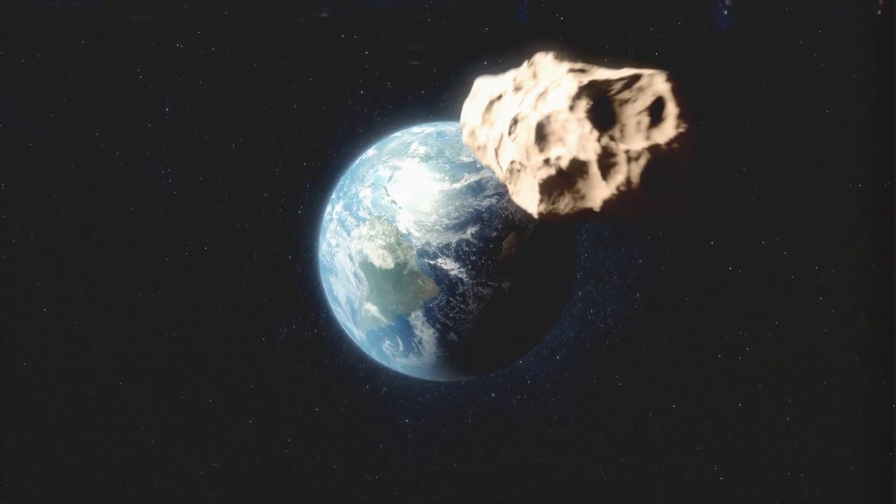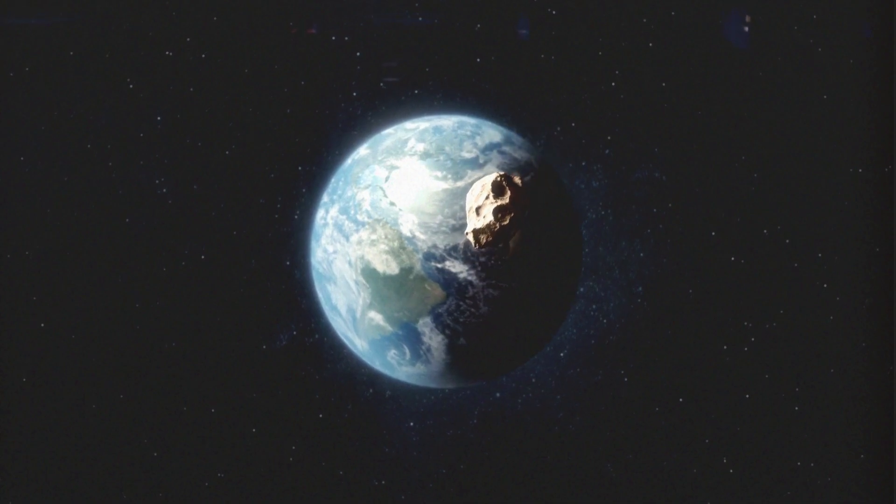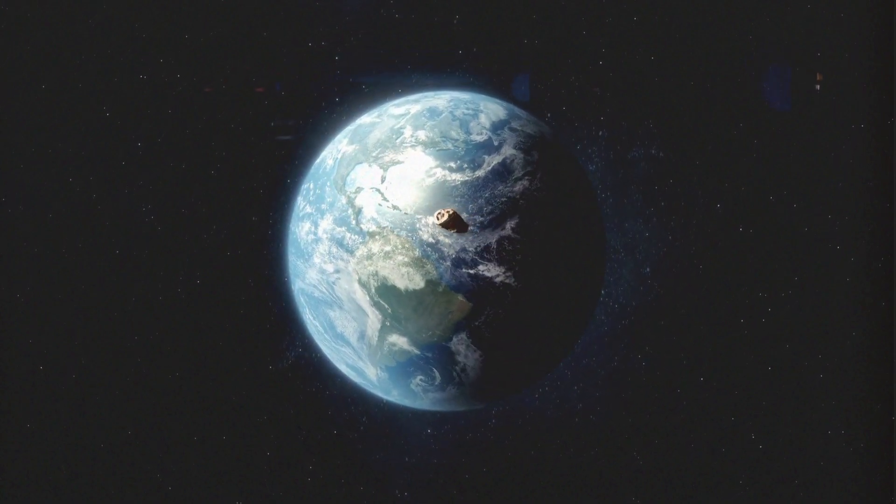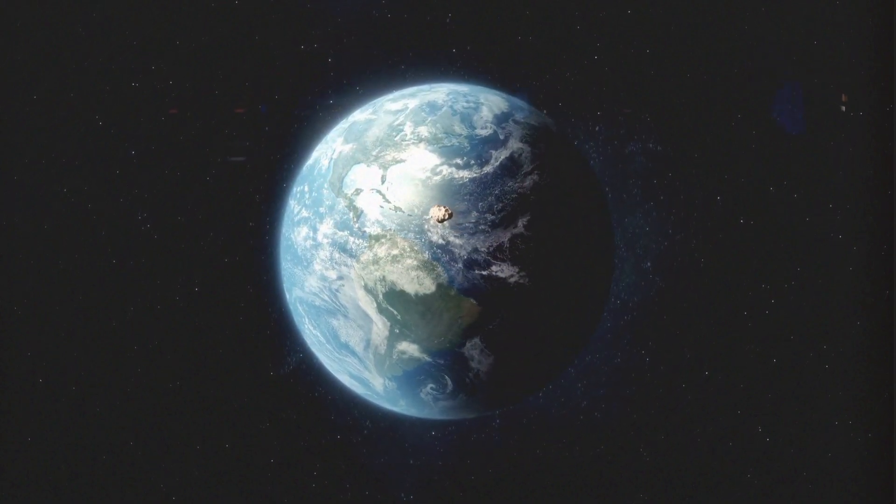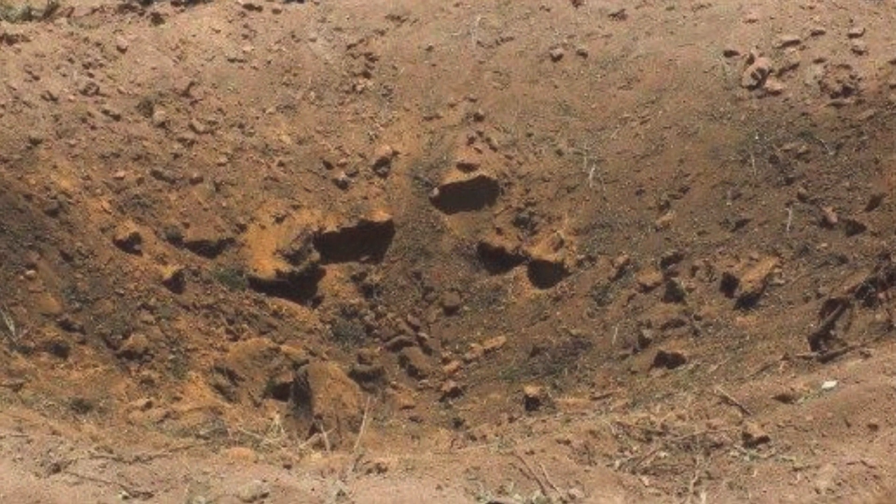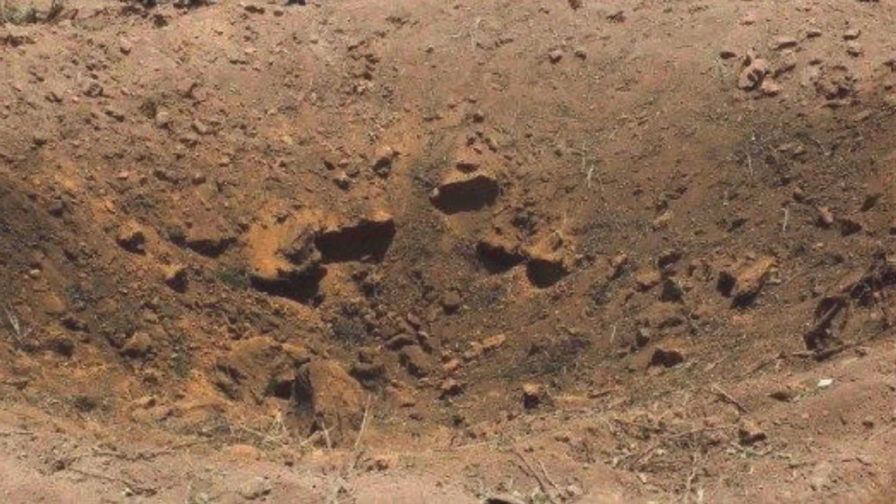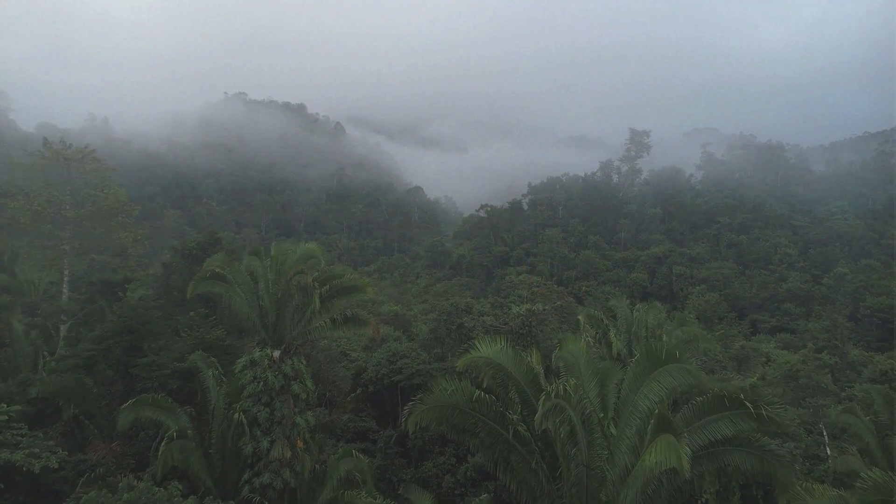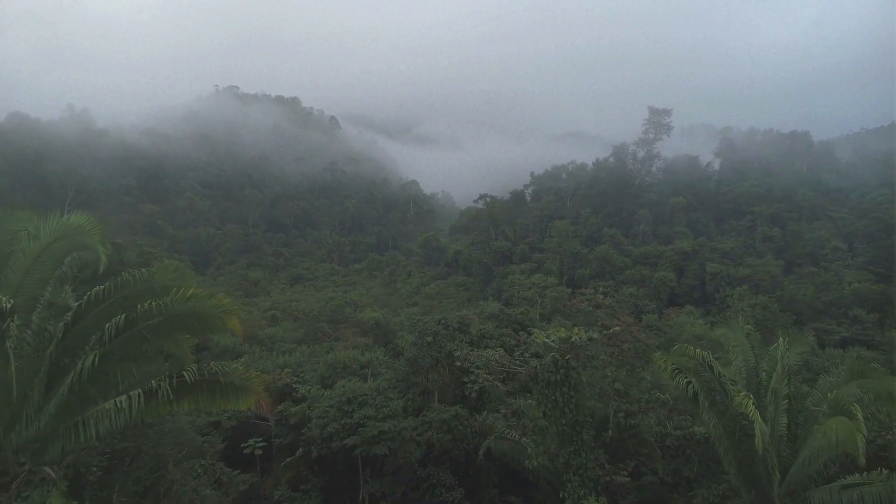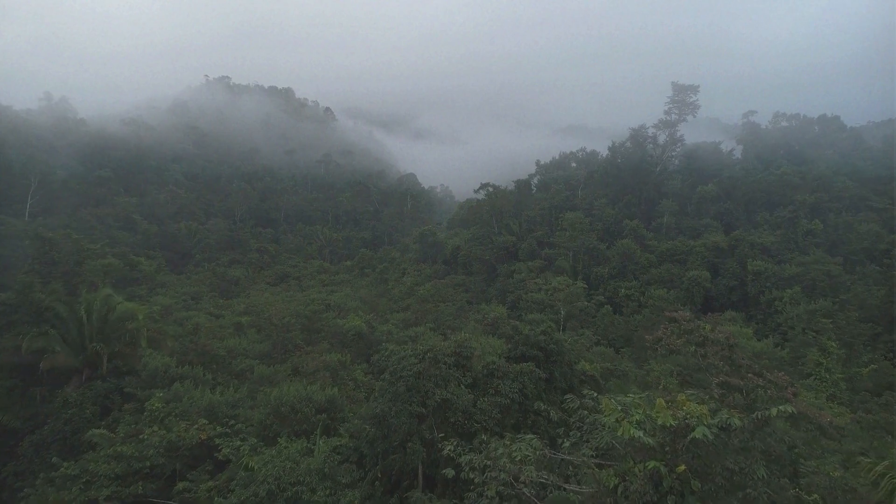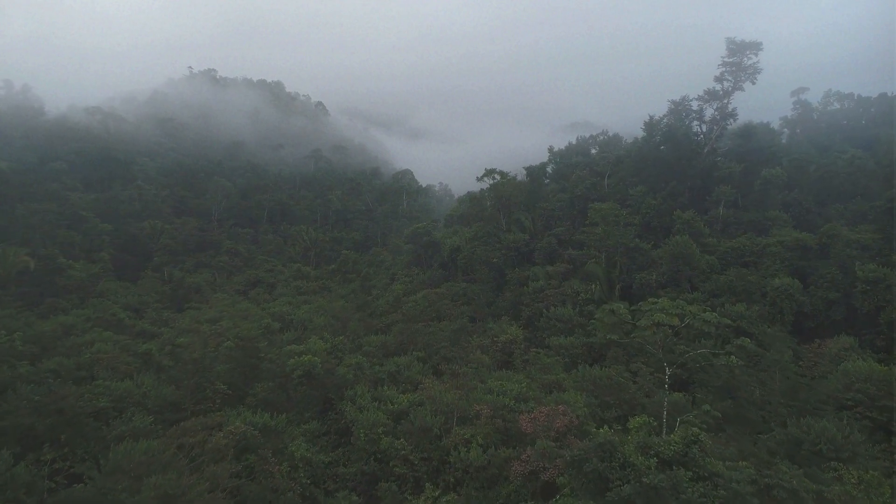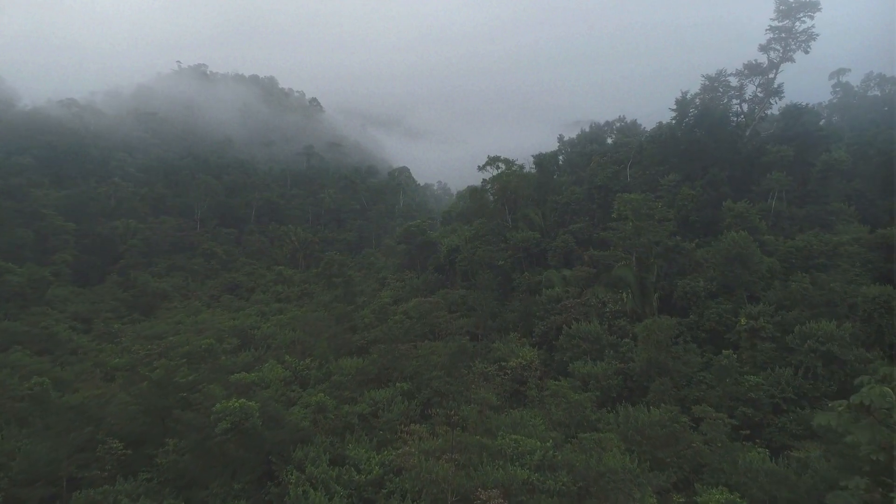Some researchers proposed that the crater was linked to asteroid 2014RC, which flew past Earth the same day. However, the asteroid's trajectory ruled out any connection, as it passed 40,000 kilometers above the planet, hours after the explosion. Other potential explanations include a natural sinkhole, ground-based explosives, or an undetected phenomenon within the Earth's crust. Local scientists discovered unusual debris at the site, such as compacted particles and reflective fragments, which were sent to international laboratories for analysis. Despite advanced studies, no definitive conclusion was reached, and the crater remains an unresolved puzzle, blending elements of cosmic mystery and terrestrial uncertainty.